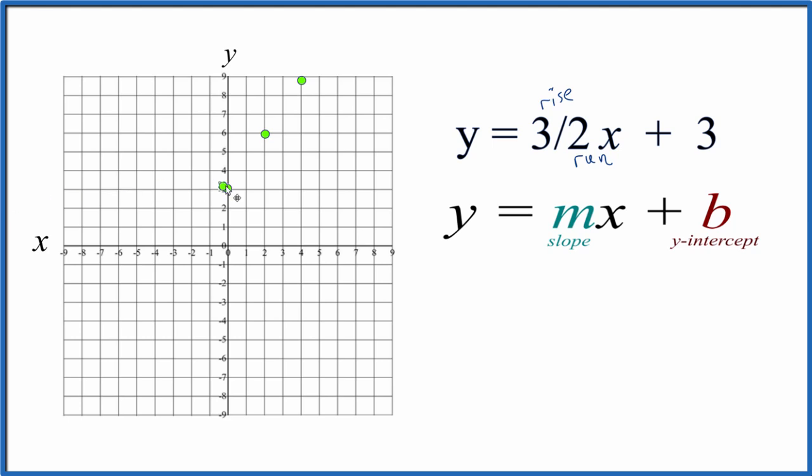We can also go in the opposite direction. We can go down one, two, three, and to the left one, two. That would be on our line as well.